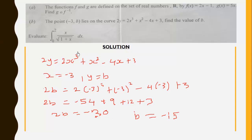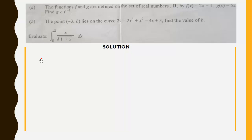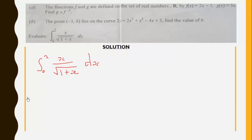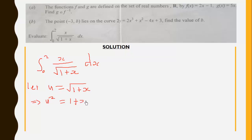Now for the final part, we have the definite integral from 0 to 2 of x over √(1 + x) dx. We use a substitution. Let u = √(1 + x), which implies u² = 1 + x. We need to find dx, so we differentiate: 2u du/dx = 1, and multiplying through by dx we get 2u du = dx.